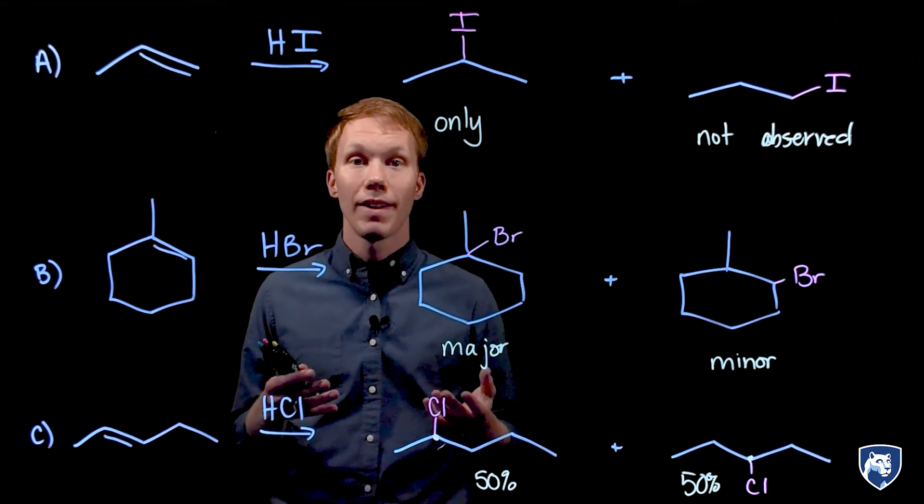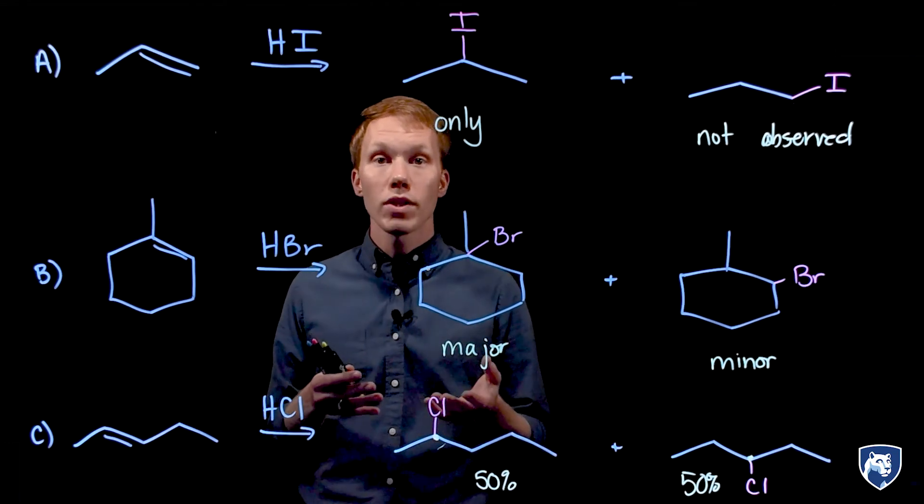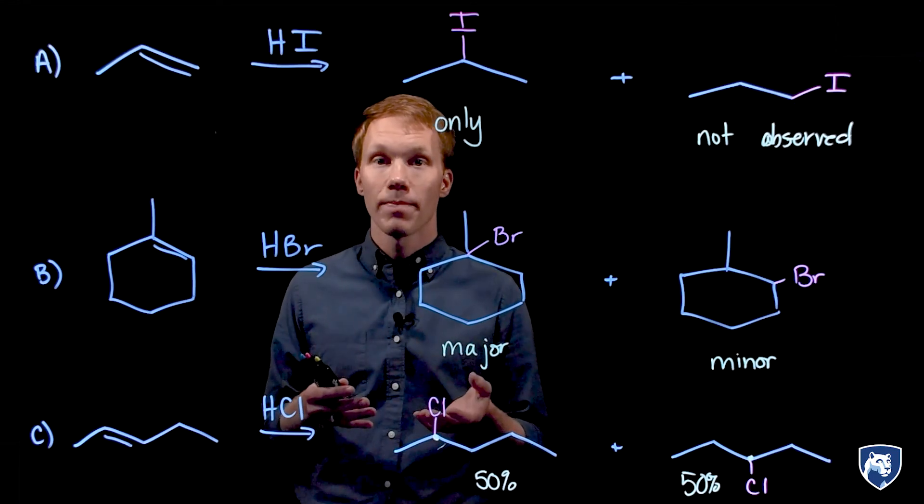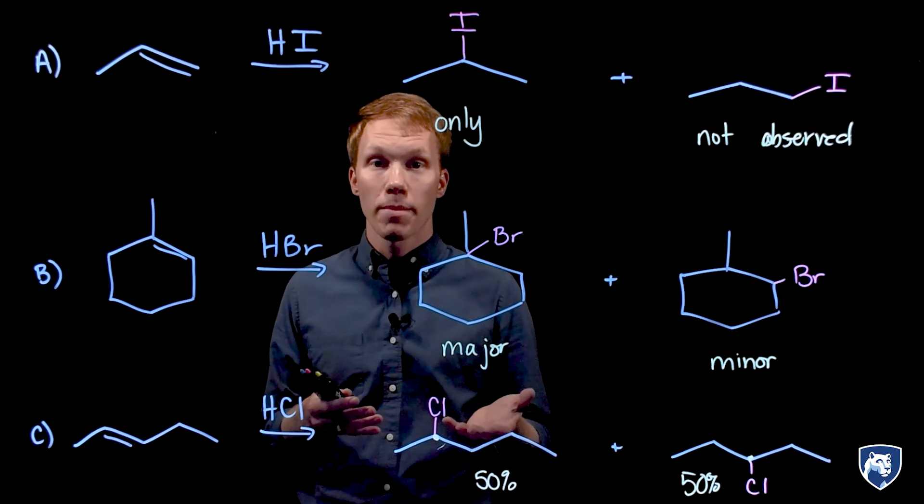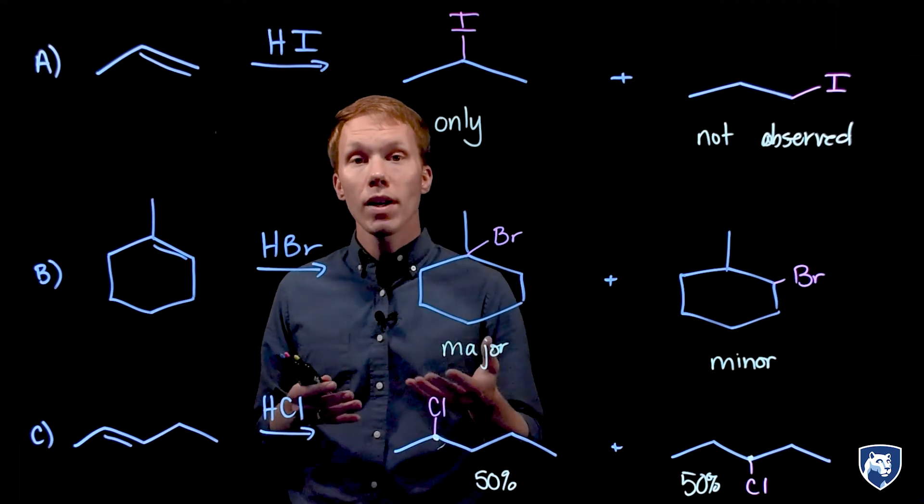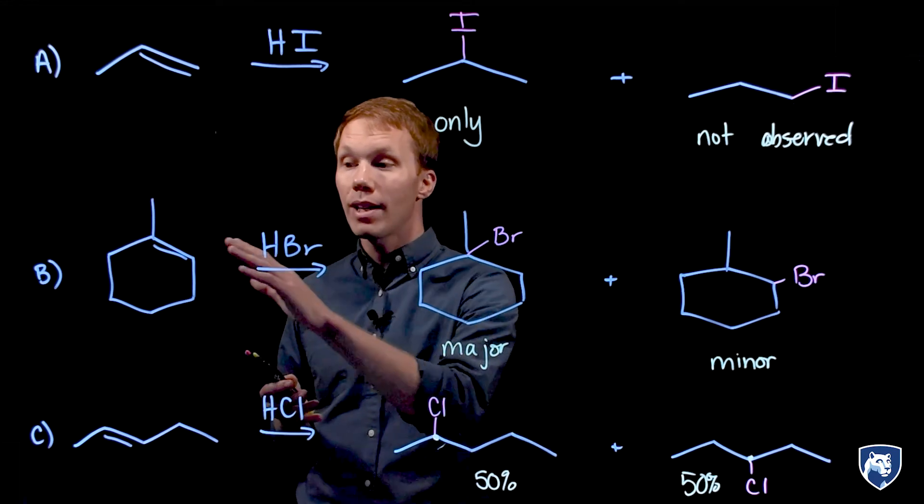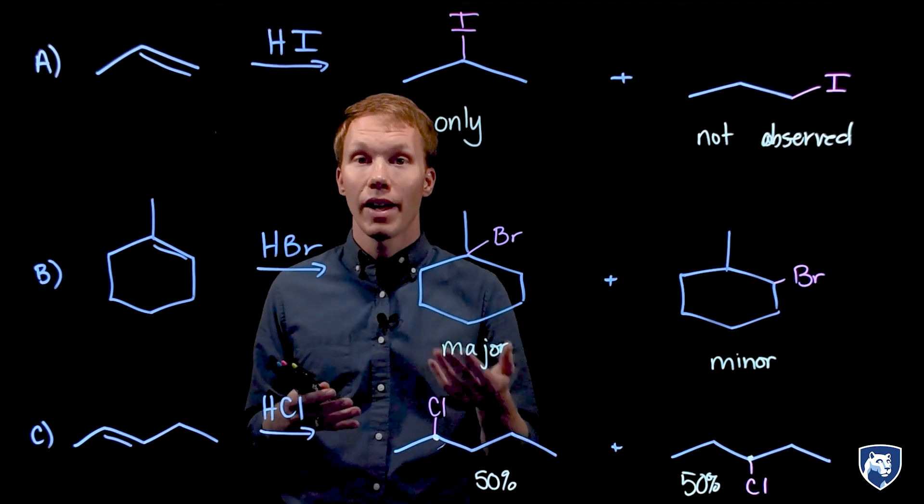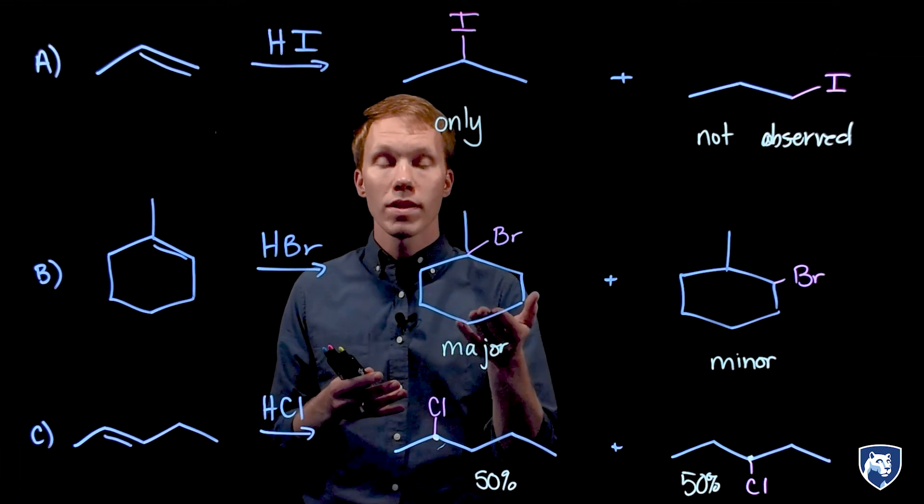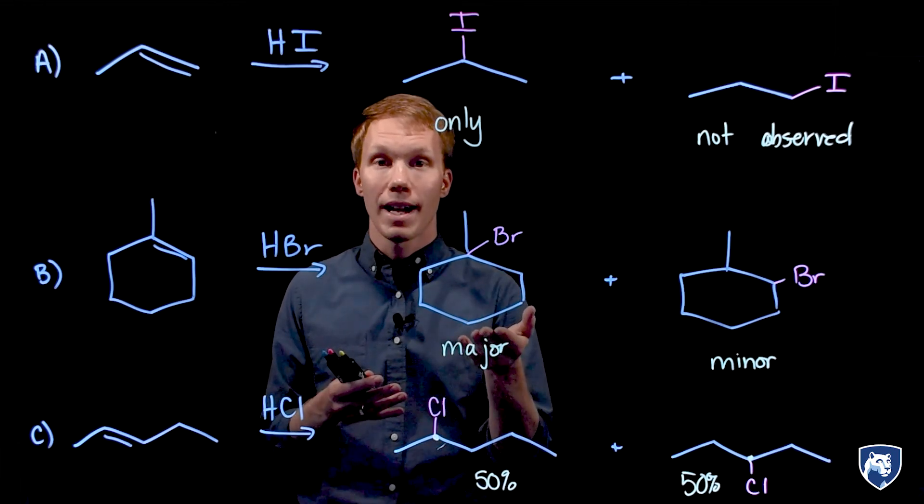A Russian chemist named Vladimir Markovnikov worked on this chemistry in the 1860s. Markovnikov came up with a rule based on his experimental observations. What Markovnikov found was that when alkenes react with HX acids in an electrophilic addition reaction, they yield the more substituted alkyl halide.